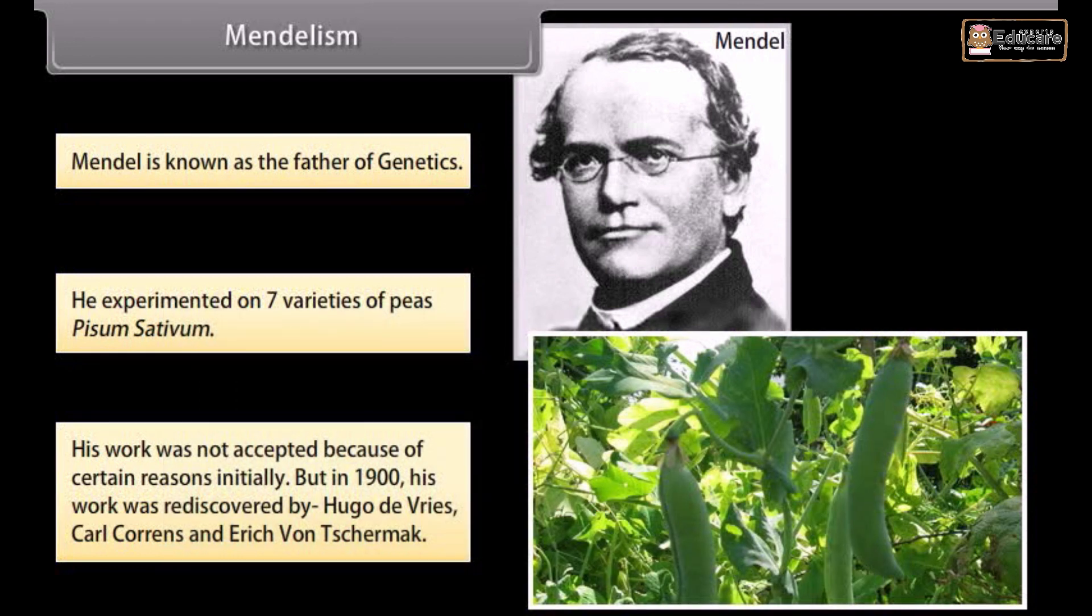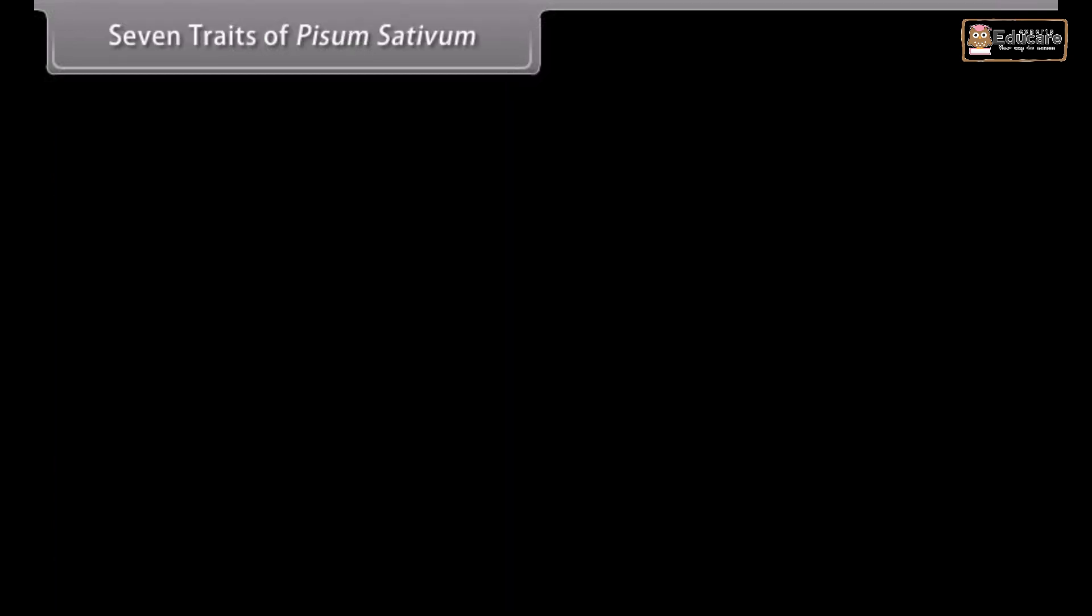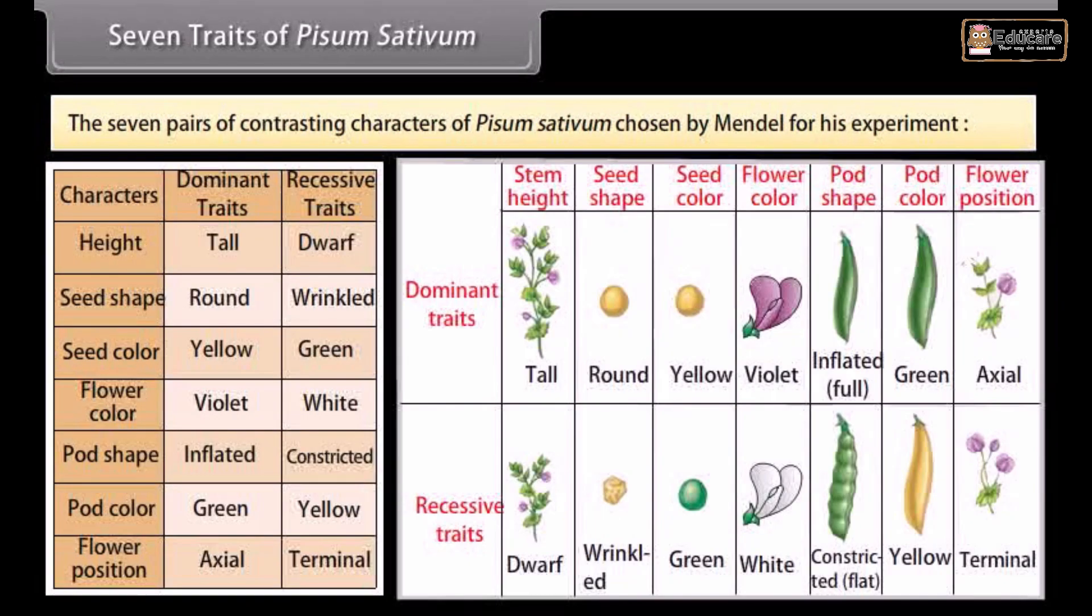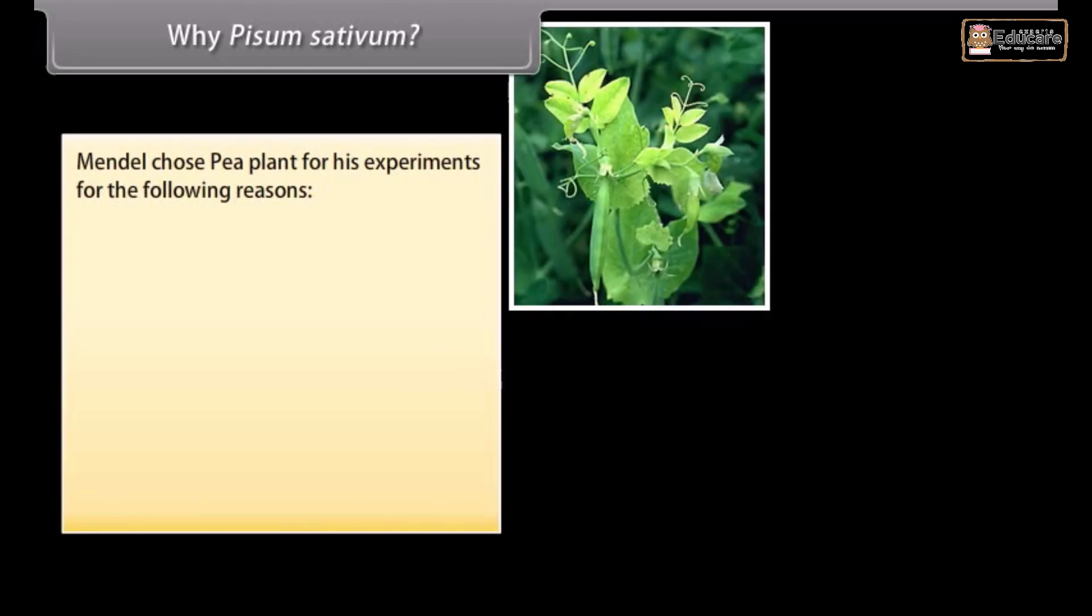Seven traits of Pisum sativum. The seven pairs of contrasting characters of Pisum sativum were chosen by Mendel for his experiment. Why Pisum sativum? Mendel chose pea plant for his experiment for the following reasons.